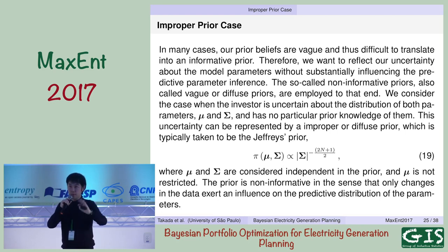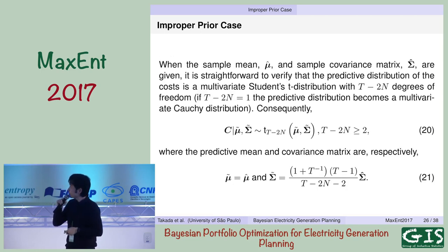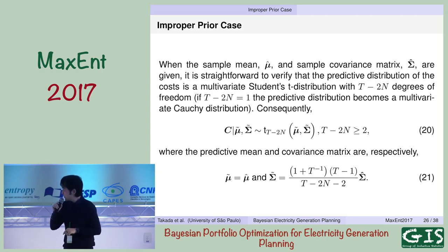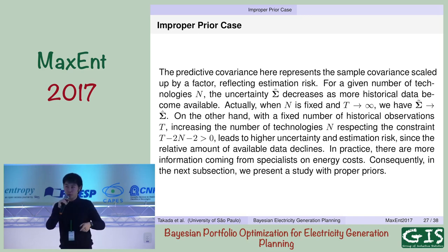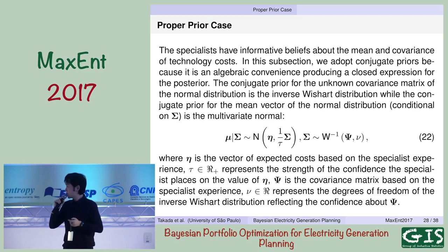I'll present the two prior cases first and then the results at the end. In the improper prior case, the distribution of costs follows a multivariate Student-t distribution, with the expressions shown here. If you increase T, you decrease uncertainty: the covariance of the posterior will approach the covariance of the sample. If you also increase the number of technologies while keeping everything else fixed, it also increases the uncertainty. The proper prior case is also a standard one, also applied yesterday: mu is considered normal and the sigma covariance matrix follows an inverse-Wishart distribution, with the posterior and its expressions given accordingly.